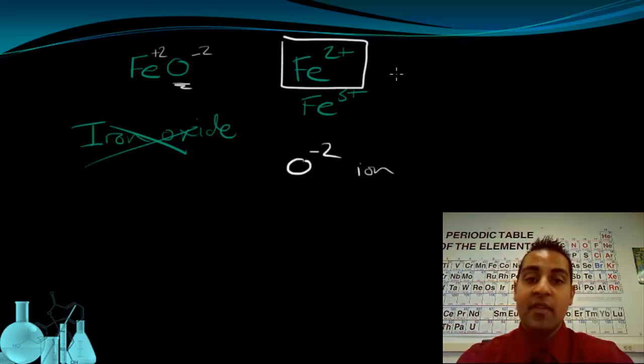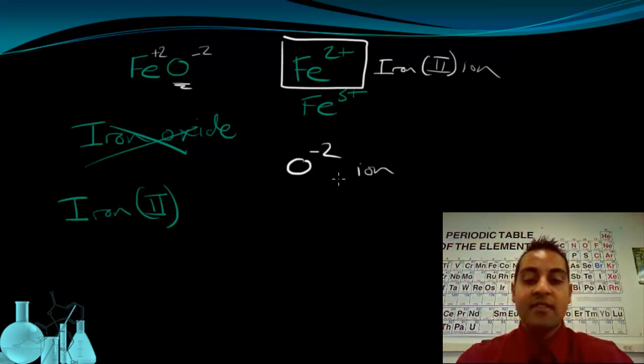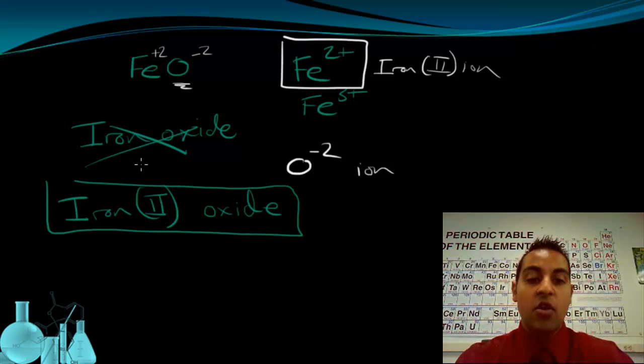And we know how to name the ion. This is an iron(II) ion. So now we can use our first name, last name method with the first name being the metal, so iron(II), and last name being the nonmetal ion, oxide. And this is the name of FeO. This formula, FeO, is iron(II) oxide.